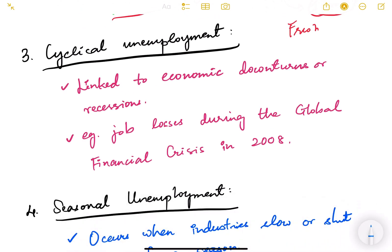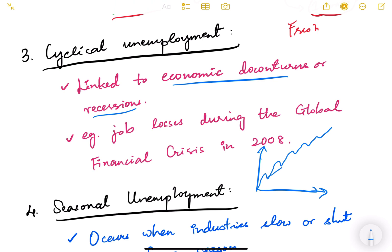Next is cyclical unemployment, which is linked to economic downturns or recessions. The economy doesn't always grow upward — in the long run it trends upward, but in the short run it cycles up and down. Whatever unemployment occurs during the recession periods of these economic cycles is known as cyclical unemployment. Example: job losses during the global financial crisis of 2008.